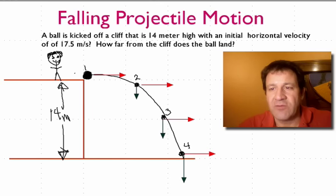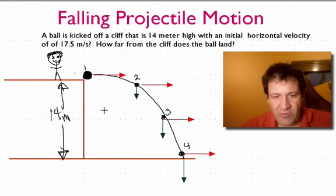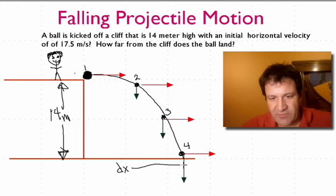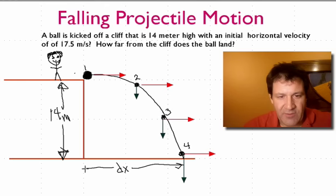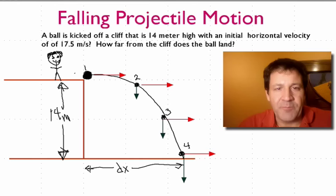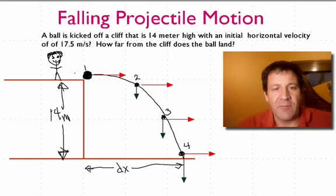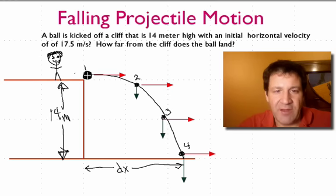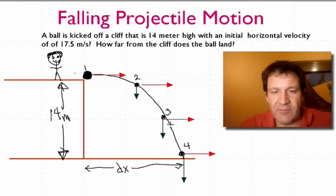What we really want to solve for is the distance in the x direction. Before we do the math, let's look at what happens conceptually. If you launch something in a horizontal direction — kick something off a building or a roof — it's going to take a parabolic path down and land somewhere. The question is: why does it take that path?